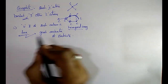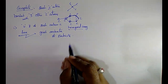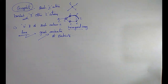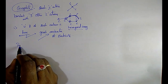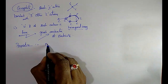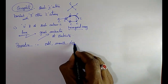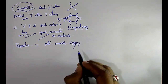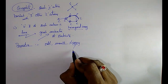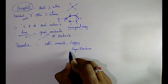The 4th electron of each atom is free and moves throughout the crystal lattice, making graphite a good conductor of electricity. Graphite is also very soft, smooth, and slippery — because it has a layer-like structure.